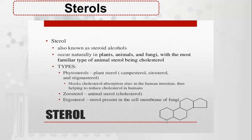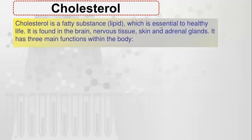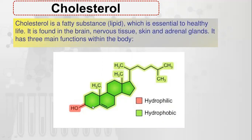The most common animal sterol is cholesterol. Cholesterol is a lipid which is essential to a healthy life. It is present in brain, nervous tissue, skin, and adrenal glands. Looking at its structure, it has three six-membered rings and one five-membered ring. Cholesterol is present in an alcoholic group, plus a methyl group and a large alkyl group. It is unsaturated with a double bond. Its hydrophilic part is very small — just one OH group — while its hydrophobic part is very large, meaning it is insoluble in water.